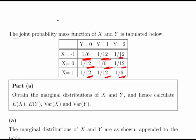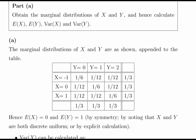For example, the probability of X equal to 1 and Y equal to 1 is 1/12. We are asked to obtain the marginal distributions of X and Y, and calculate the expected value of X, the expected value of Y, the variance of X, and the variance of Y.